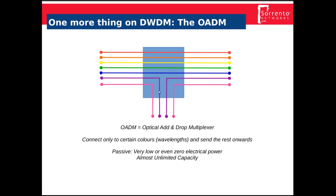The drop channels — the client channels — are dropped out locally. So red and orange pass straight through from A to B without stopping, while purple and pink in this example are dropped locally. This means we can do interesting things in the optical layer without using electronics at all. Where you might have used an Ethernet switch for this task, here you have essentially a piece of glass doing the same job.